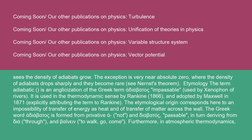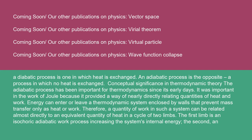The etymological origin corresponds to an impossibility of transfer of energy as heat and of transfer of matter across the wall. The Greek word 'adiabatos' is formed from the privative 'a-' (not) and 'diabatos' (passable), in turn deriving from 'dia' (through) and 'bainein' (to walk, go, come). Furthermore, in atmospheric thermodynamics, a diabatic process is one in which heat is exchanged, while an adiabatic process is the opposite — a process in which no heat is exchanged.